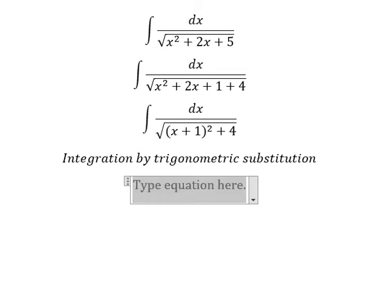So I will put x plus 1 equal to 2 times tan t. Because if we put this one here, we have 4 times tan² t. Number four, we can do factorization. tan² t plus 1, we change for sec² t.